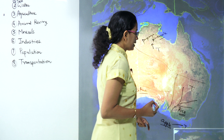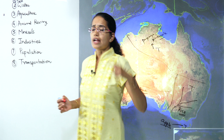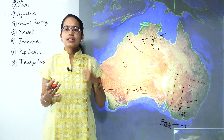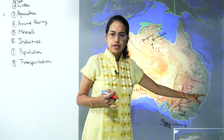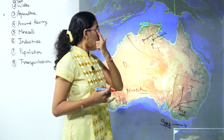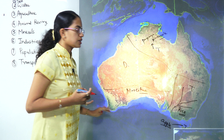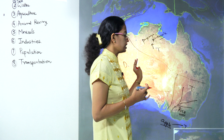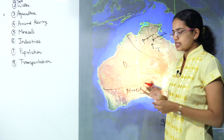Coming on to rice, we have already talked about the Murray-Darling Basin as the prominent position. Then coming on to wheat cultivation: wheat would be cultivated in the region of New South Wales, region of Victoria and parts of Northern Australia. However Western Australia, since it's a desert region, won't have wheat cultivation. The only cultivation seen would be in the form of coarse grains.